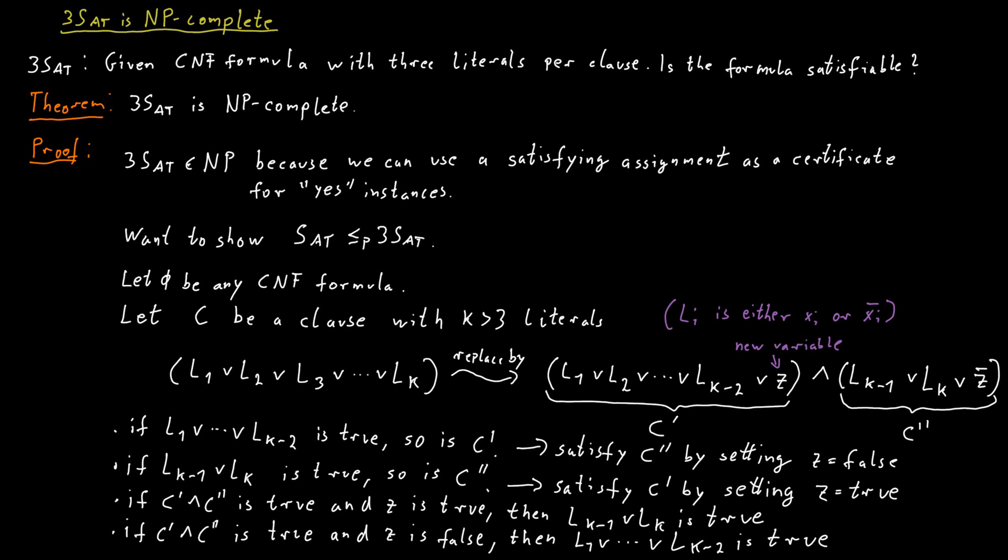And therefore, if we just take this satisfying assignment for this new formula and ignore the values that these new variables of type z get, then this must be a satisfying assignment for the old formula as well.